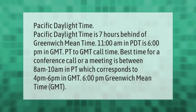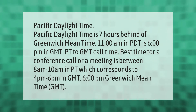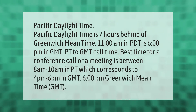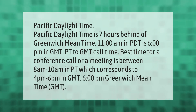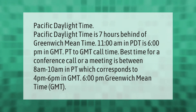Pacific Daylight Time is seven hours behind Greenwich Mean Time. 11 a.m. in PDT is 6 p.m. in GMT. The best time for a conference call or meeting between PT and GMT is between 8 a.m. to 10 a.m. in PT, which corresponds to 4 p.m. to 6 p.m. in GMT.